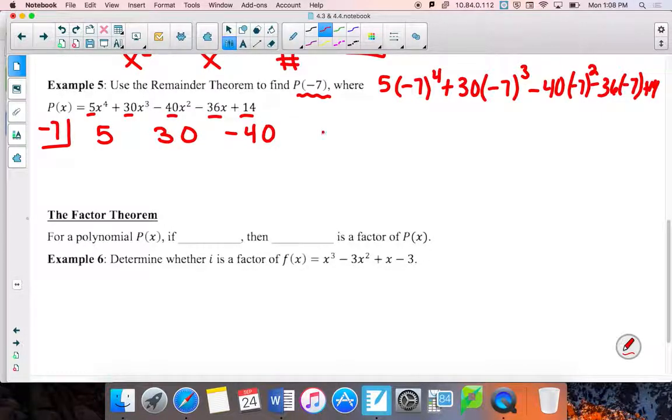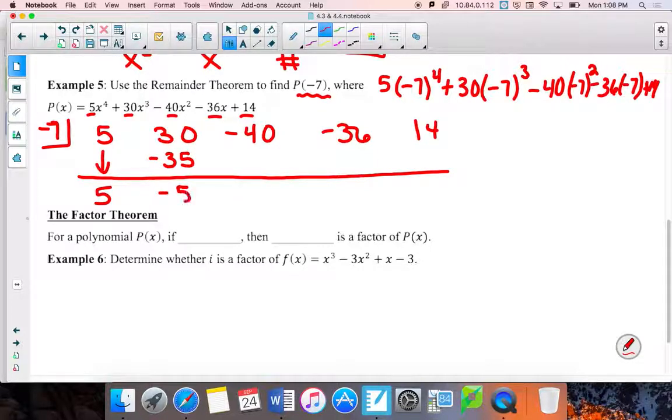So negative 7 is already a 0, so he's going to go in the little box off on its own. Now take all the numbers, making sure that if we were missing a term, we need to include it. But I'm going to just write that. So 5, 30, negative 40, negative 36, and 14. Ooh, that 4 got a little funky. Okay, skip. Draw your line. Bring down your first guy. Time to multiply. Negative 7 times 5 is negative 35. Add. Multiply. Add. Multiply. Add. And last, multiply. Add.